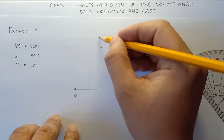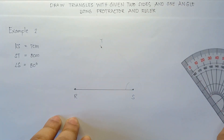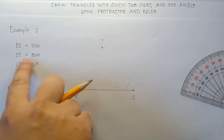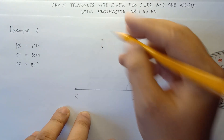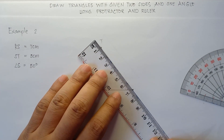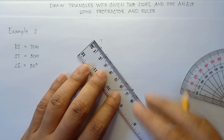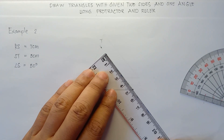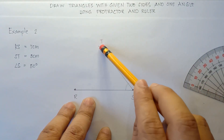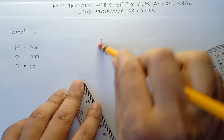This will be point T — upper part is T. We have ST that is 5 cm. From 7 to 2 on the ruler, that would be 5 cm. Let's measure — yes, 5 cm. Do not be confused: the line drawn is our guide for the angle, but we need to measure ST at 5 cm. We can erase the angle guide since we're done with the angle, and this will be point T.